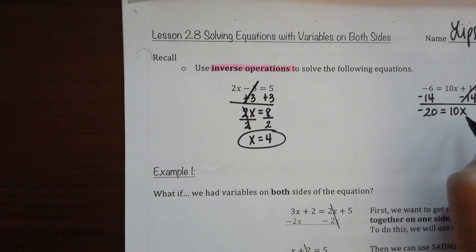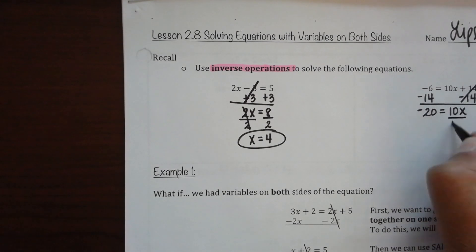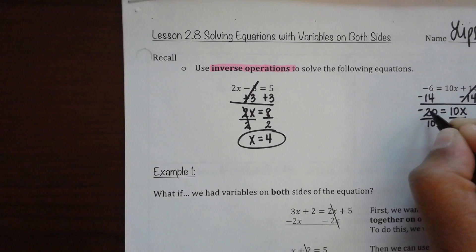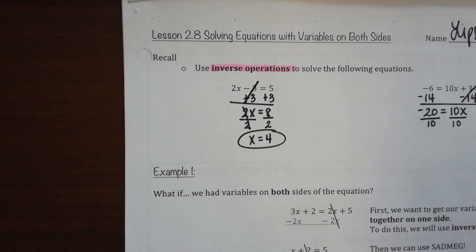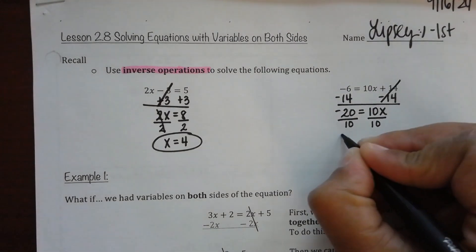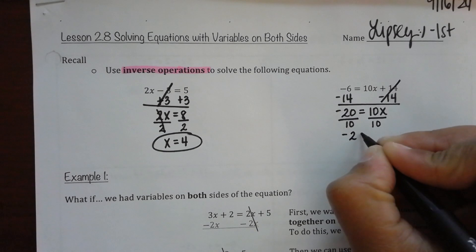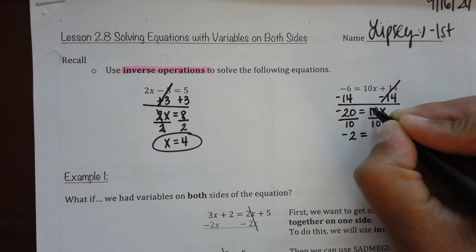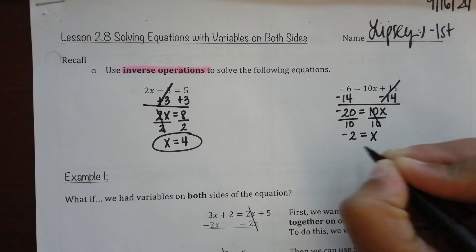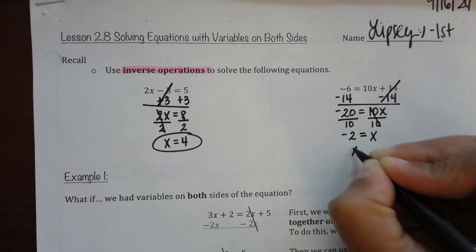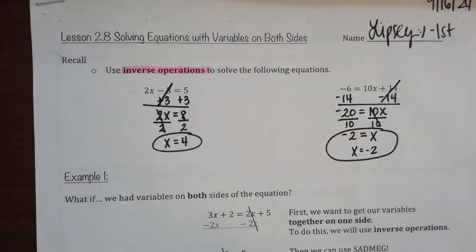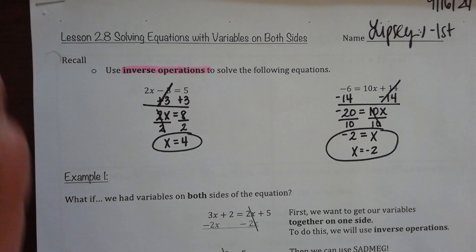What needs to happen next? What's being typed in? Negative 20 divided by 10. That gets you — and then what cancels out? What's brought down? What's another way to write this? Are they both good answers? Will I accept both? Any questions there?